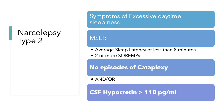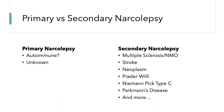In narcolepsy type 2, all the same MSLT criteria apply, except there is no cataplexy, and if a spinal tap is done, hypocretin levels will be normal. There is also the distinction of primary versus secondary narcolepsy. Primary means you have narcolepsy for its own sake, while secondary narcolepsy results from an organic lesion insulting the lateral hypothalamus — where orexin and hypocretin neurons live — creating those symptoms.